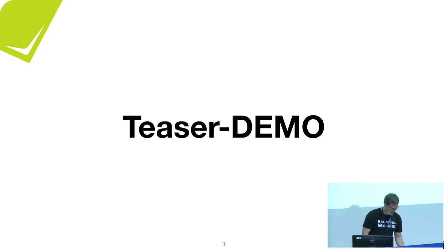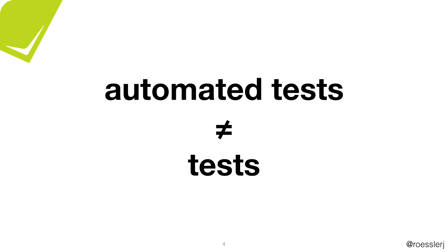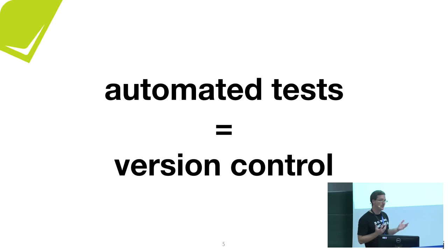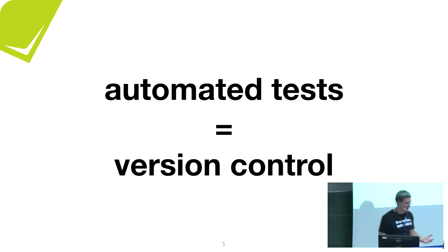First, I want you to think about how automated tests are not actually tests. An automated test doesn't tell you about inconsistencies or bugs already in the software. An automated test only makes sure that if you change something, it doesn't break something else. In that regard it's more like version control — you use it to get notified about changes. Test automation doesn't help you find bugs; it only guards against introducing new ones. That's why it's called a regression test.